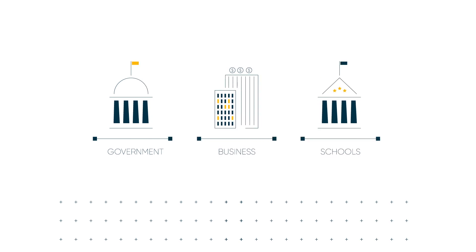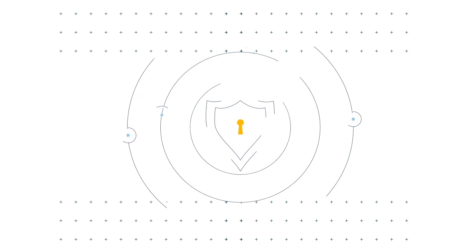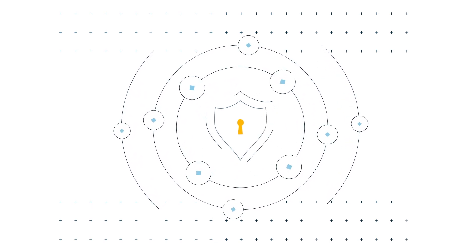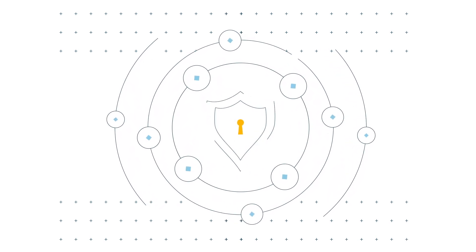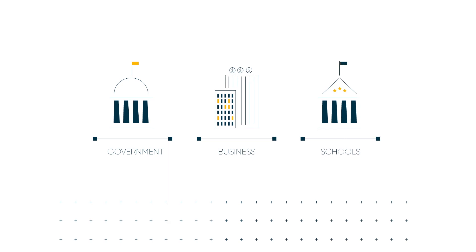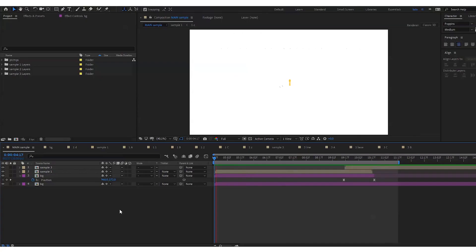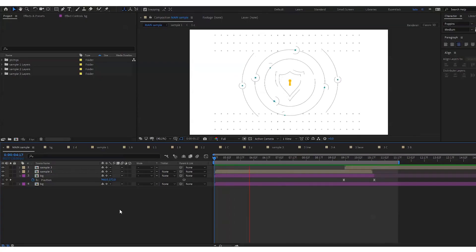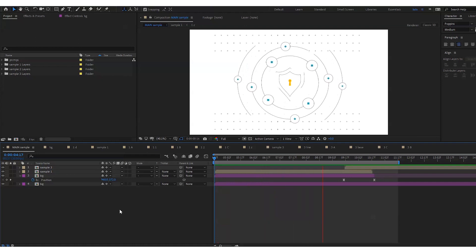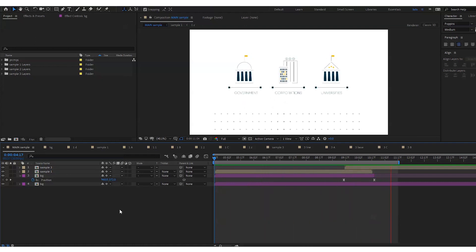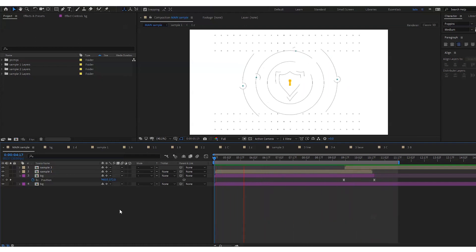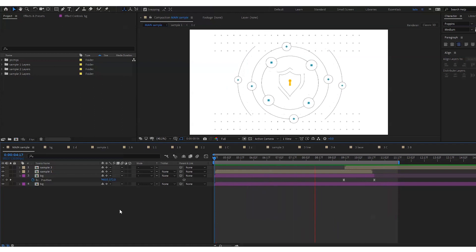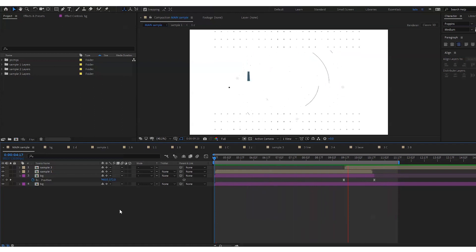Hi guys, welcome back! If you're new here, I'm Kristina. Today I'm going to deconstruct the animation of these two scenes. I'll show you what's inside the project and we'll look at some layers frame by frame. This is a little experiment — I've never done this format before, but I hope you'll like it. I feel like I can actually show you a lot more by commenting on an existing animation rather than animating on the go.